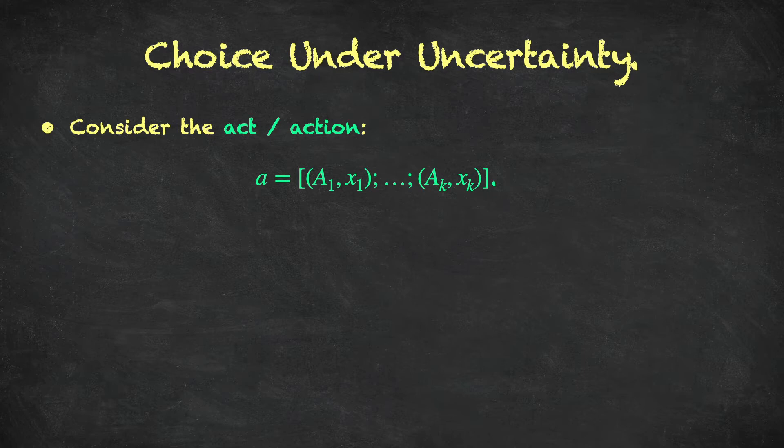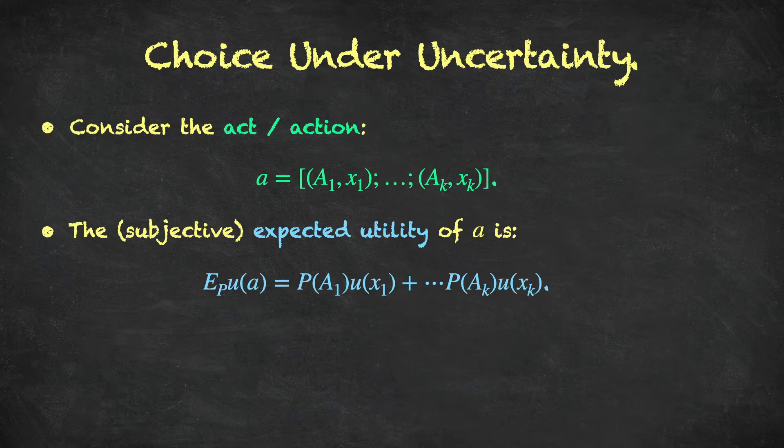our decision-maker will receive outcome xk. The subjective expected utility of the act a is as follows. So the decision-maker has two components: a probability measure, capital P, which quantifies their belief regarding the likelihood of these events, and a utility function, a von Neumann-Morgenstern utility function for the outcomes. So the outcome x1, for example, we take the utility of that outcome, and then we multiply it by the subjective probability, capital P of A1. We do this for all k outcomes, taking this weighted sum,